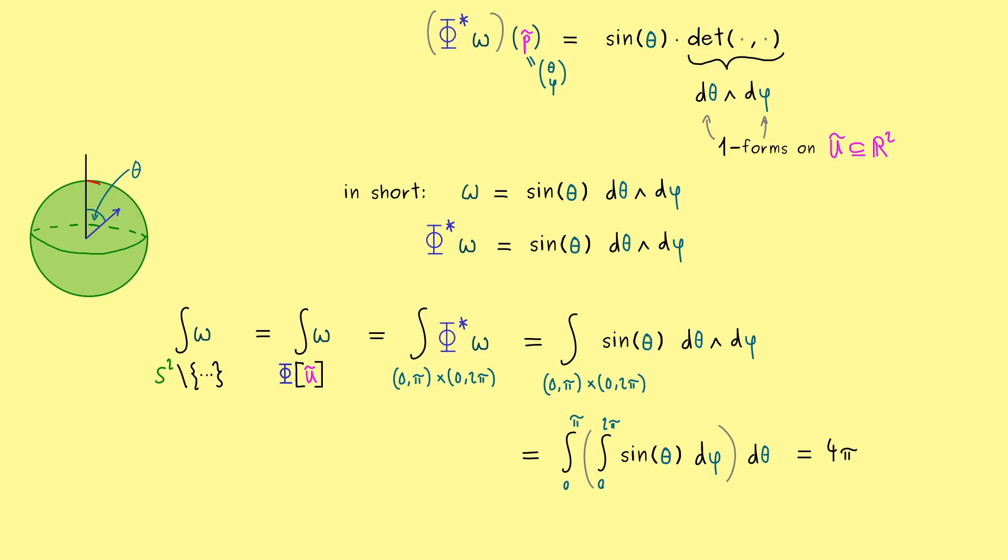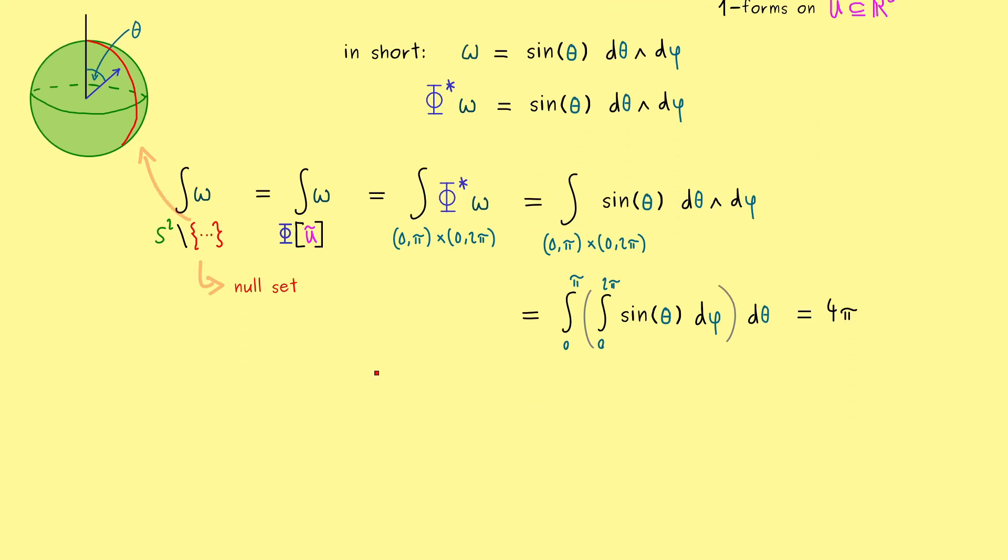Hence we get the whole surface area of the sphere S^2. This means the line we have omitted on the sphere does not matter for the integration. Therefore we say that the part that is missing here is a set of measure 0. A common name for such a set is null set. We can simply omit such a set in the integration because it will not change the result at all. So now after this long example we are finally ready for the definition for the integration. Here we will fix the notions measurable set and null set.